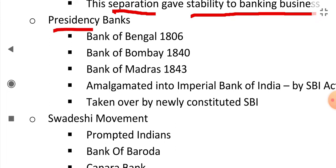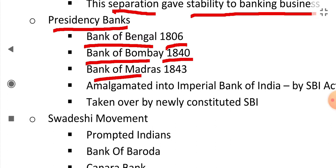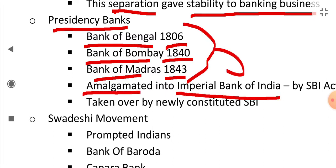Now come the presidency banks. The presidency banks are: Bank of Bengal, established in 1806; Bank of Bombay in 1840; and Bank of Madras in 1843. They were all amalgamated into the Imperial Bank of India. The Imperial Bank of India was later taken over by the State Bank of India (SBI).